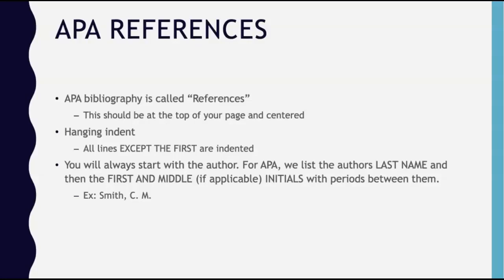You will list your sources in alphabetical order by the author's last name. If an article has multiple authors, use the first author listed and keep the original order of the article. Only the overall list of references should be alphabetized. Use the author's last name, comma, first initial, period, second initial, period.